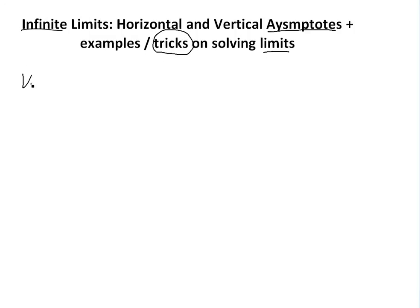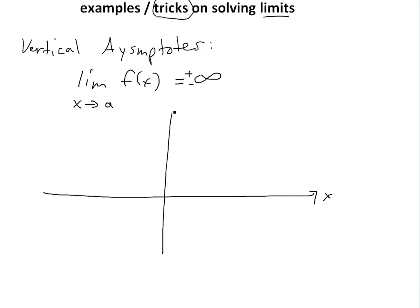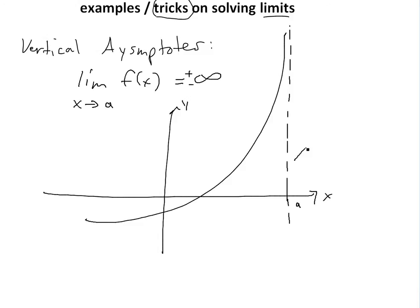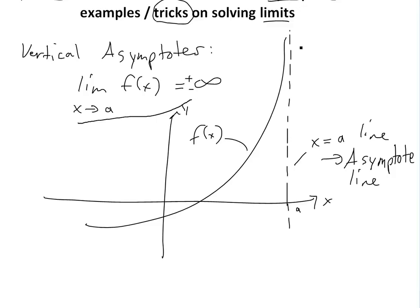So let's start off with vertical asymptotes. These are basically defined as: if you have the limit as x approaches a of f(x) equals positive or minus infinity — it could be either one. To illustrate this, you have an x-axis and y-axis, and a function like this where it never reaches a certain line. So this is x equals a, and this is the asymptote — the function gets closer and closer to it but never reaches it.